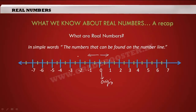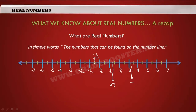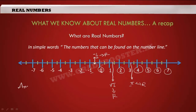Negative numbers like -1, -2, -3, -4. Not only these — any point on this number line is a real number. For example, this point is represented by -1/2, this point by √2, and this point by π. So -1/2 is a real number, √2 is a real number, π is a real number. Any point on the number line is a real number.